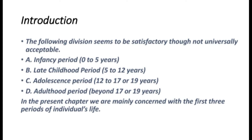The following divisions seem to be satisfactory though not universally acceptable. The first stage is the infancy period, from 0 to 5 years of age. Second is the late childhood period, from 5 to 12 years. The adolescent period starts from 12 to 17 or 19 years of age. After that, the adulthood period begins, beyond 17 or 19 years. In the present chapter, we are mainly concerned with the first three periods of individual life, which we shall study in detail. So let's begin with the first stage.